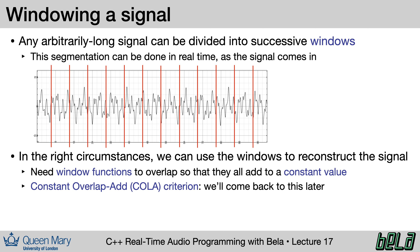We'll see in a moment how to write the code that does this segmentation. It turns out that in the right set of circumstances, it's possible to take each of these individual windows and reconstruct the original signal with no loss of data. This depends on a certain set of conditions, including what kinds of window functions we use and to what extent they overlap. We can summarize these conditions as the constant overlap-add criterion, which basically means that when we add up all the window functions together, they should add up to a constant value.